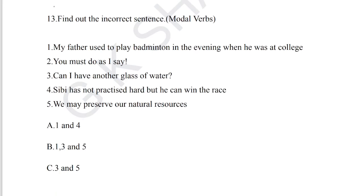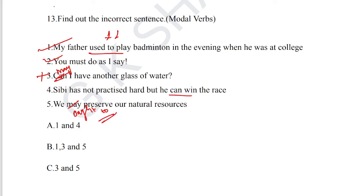Question number 13: find out the incorrect sentence regarding modal verbs. Sentence 1: 'My father used to play badminton in the evening when he was at college' — used to for recollection of past events, correct. Sentence 2: 'You must do as I say' — correct. Sentence 3: 'Can I have another glass of water?' — should be 'May I' for permission, so three is incorrect. Sentence 5: 'We may preserve our natural resources' — should be 'we are to,' so five is also incorrect. Option C — three and five — is the answer for question number 13.